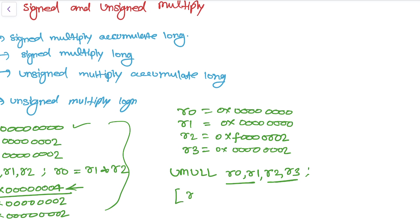The higher bytes will be stored into R1 and the lower bytes will be stored into R0, and then it will multiply R2 and R3.